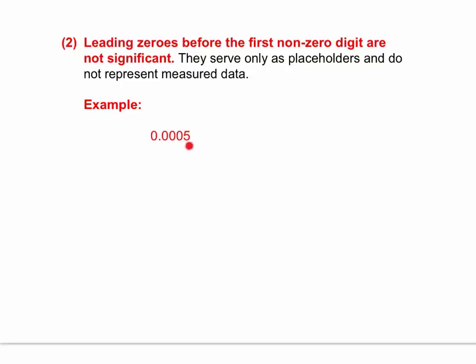In this case, only the five was a measured digit. So therefore, there is one significant figure. Please make sure that you have the rule and example recorded in your notes.